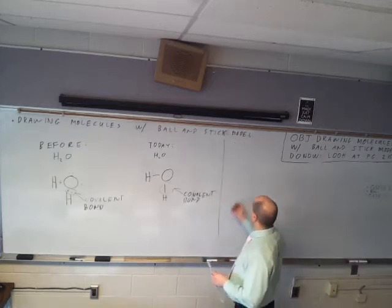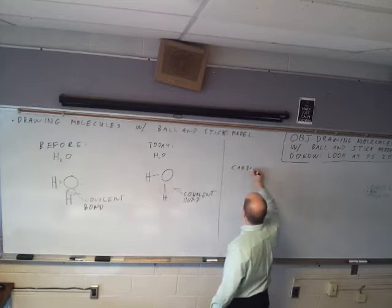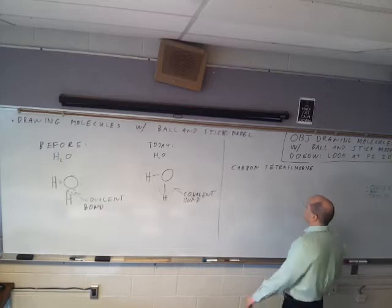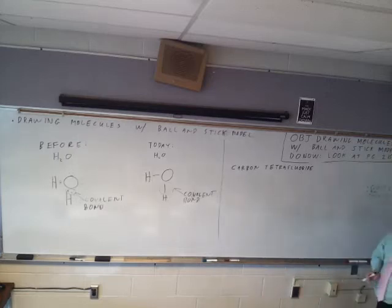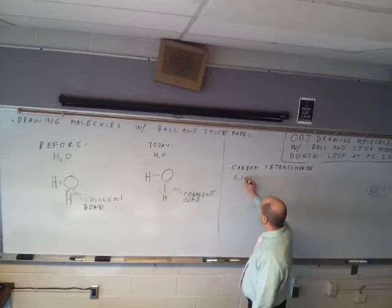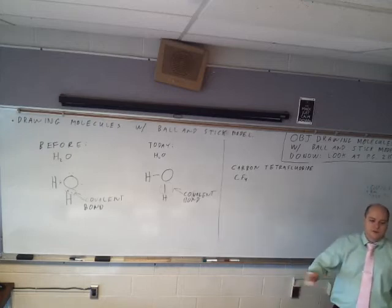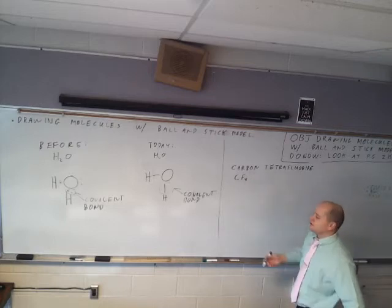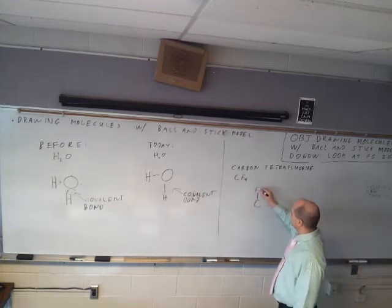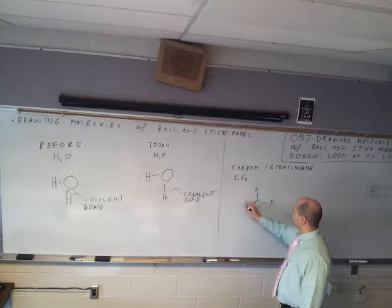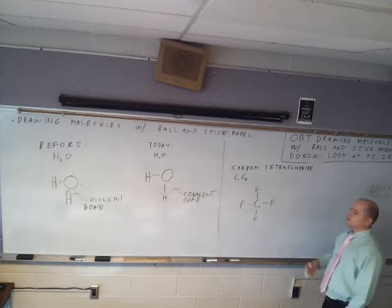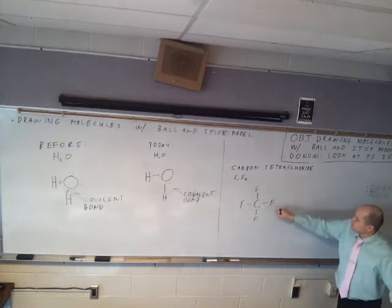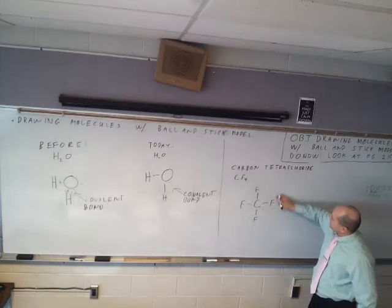Let's draw carbon tetrafluoride. What's the formula? CF₄. You should remember from Friday with dot structures that fluorine has seven valence electrons, so it can only make one bond to something. So all the fluorines have to attach to the carbon. We're going to draw a carbon in the middle and then attach all of our fluorines. We don't have to draw all the other six electrons around each fluorine — each stick is two electrons, and we know the other electrons are there.